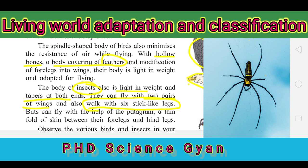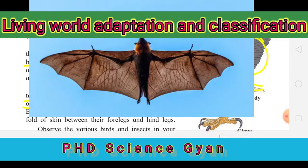The bat can fly with the help of a patagium. The patagium is a membrane that stretches along the body of the bat, enabling it to fly.